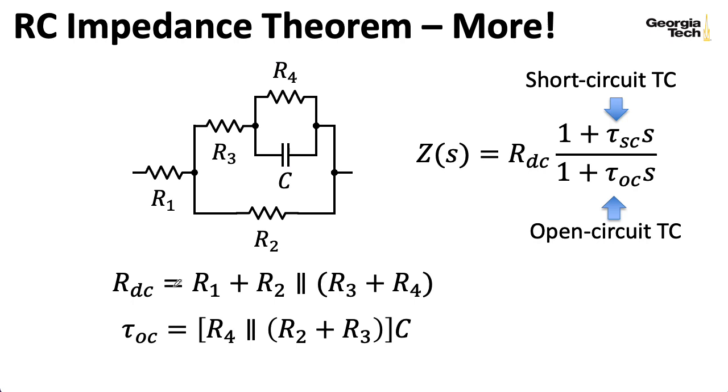So the open circuit time constant has R1 just dangling, so it might as well not be in the circuit. And so if we take the capacitor and take our wire clippers here and put an ohmmeter, we'll see R4 in parallel with R3 in series with R2. But I need to remember to multiply by C in order to get a time constant. A very common mistake I personally make is to forget to put in that C.